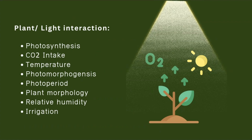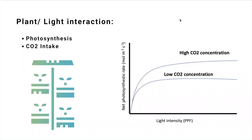Let's start with photosynthesis and CO2 intake. We know photosynthesis can be directly related to light — the more light, the more photosynthesis, of course before reaching the saturation point. After this point, photosynthesis will not go up, and you can also have a reduction in photosynthesis with an excess of light. However, CO2 intake can also be added to this equation — it's not only about light and photosynthesis.